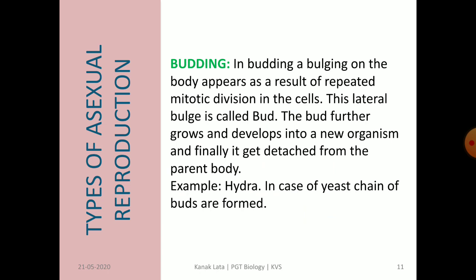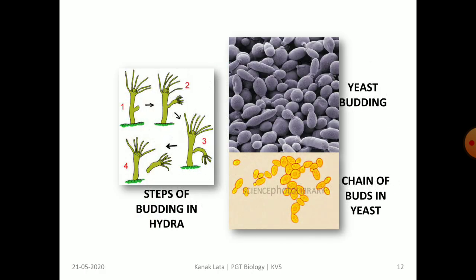The second type of asexual reproduction is budding. In this case, a bulge appears on the body of the organism due to repeated mitotic division of cells. This lateral bulge is called a bud. The bud further grows and develops into a new organism. Finally, the bud detaches from the parent body and grows as an individual organism. Examples of budding are seen commonly in hydra and yeast. In yeast, chains of buds are also seen. The given figure shows the steps of budding in hydra, as well as budding in yeast and chains of buds in yeast.